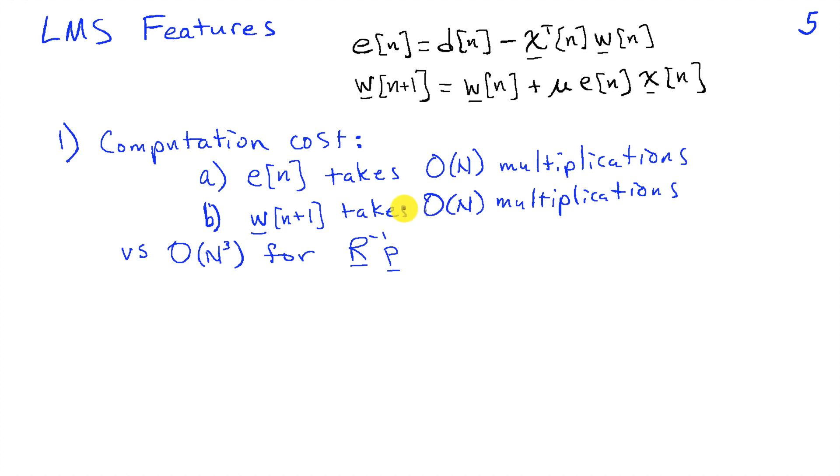So the net computation here is on the order capital N at each time step. And if you compare that to computing R inverse P, we had to implement order N cubed operations. So at each iteration, this is a much, much lower complexity algorithm than computing the normal equations.